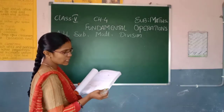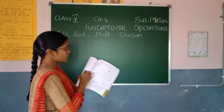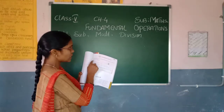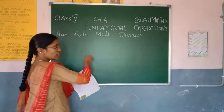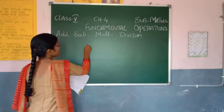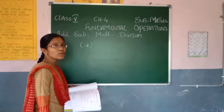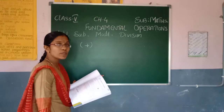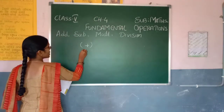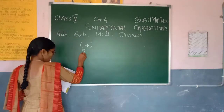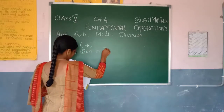See in the textbook, page number 95. He has given addition and subtraction. The symbol of addition is plus. The result of the addition will be known as the total or sum.